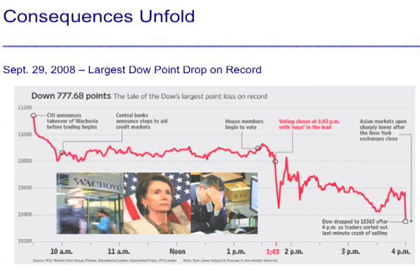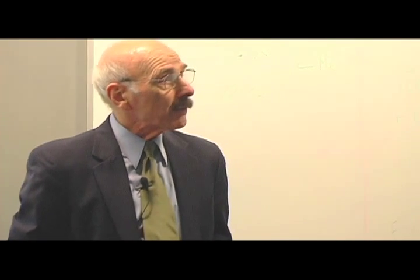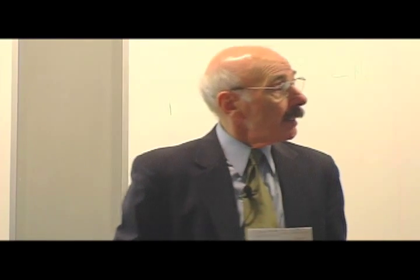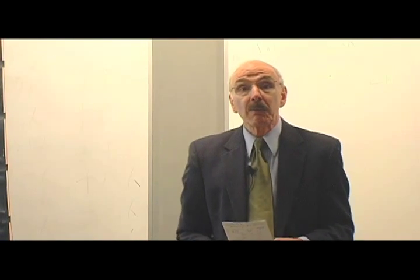As a further consequence, on September 29th of 2008, we experienced the largest point drop in history in the Dow — not the largest percentage, but the largest point drop of 778 points. This was the day that Congress failed to pass the bank rescue plan called the Troubled Asset Relief Plan. A further consequence unfolding from the financial meltdown caused by these derivatives is job losses. The last two recessions are plotted here: the blue line shows the 1990 recession, the red line represents the 2001 recession, and the green line represents the present recession. Job losses are heading straight down — we haven't even hit the point of inflection. This is what's scaring our policymakers and the Fed.